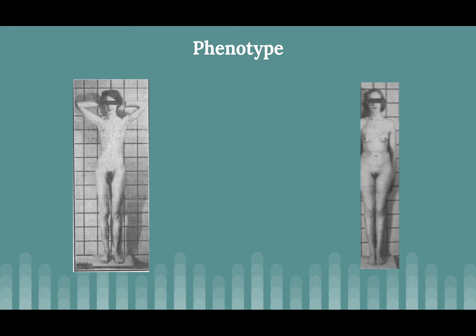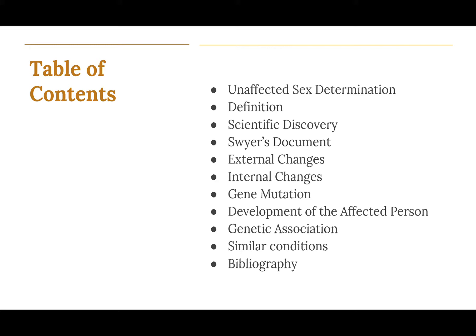In order to explain this disorder on a biological basis, I'll first talk about the normal or unaffected sex determination. Later on, I'll give a definition of the syndrome and its scientific discovery. We'll also have a look at the original Swire's document. Next, we're going to talk about the external and internal changes in people affected with this disorder, as well as the most common gene mutation behind Swire's syndrome. We'll also look at the development of the affected person from the embryonic stage up to adulthood, the genetic associations of Swire's syndrome, as well as similar conditions.